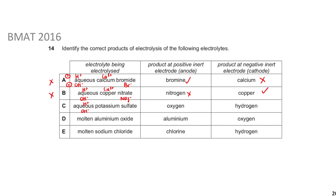For option C - aqueous potassium sulfate (K2SO4): we have H+, OH-, K+, and SO4 2-. At the positive electrode: sulfate is not a halide, so OH- oxidizes - this normally forms oxygen. That looks correct. At the negative electrode: hydrogen versus K+. Potassium is more reactive than hydrogen, so the less reactive hydrogen forms at the cathode. Therefore option C is the correct answer.